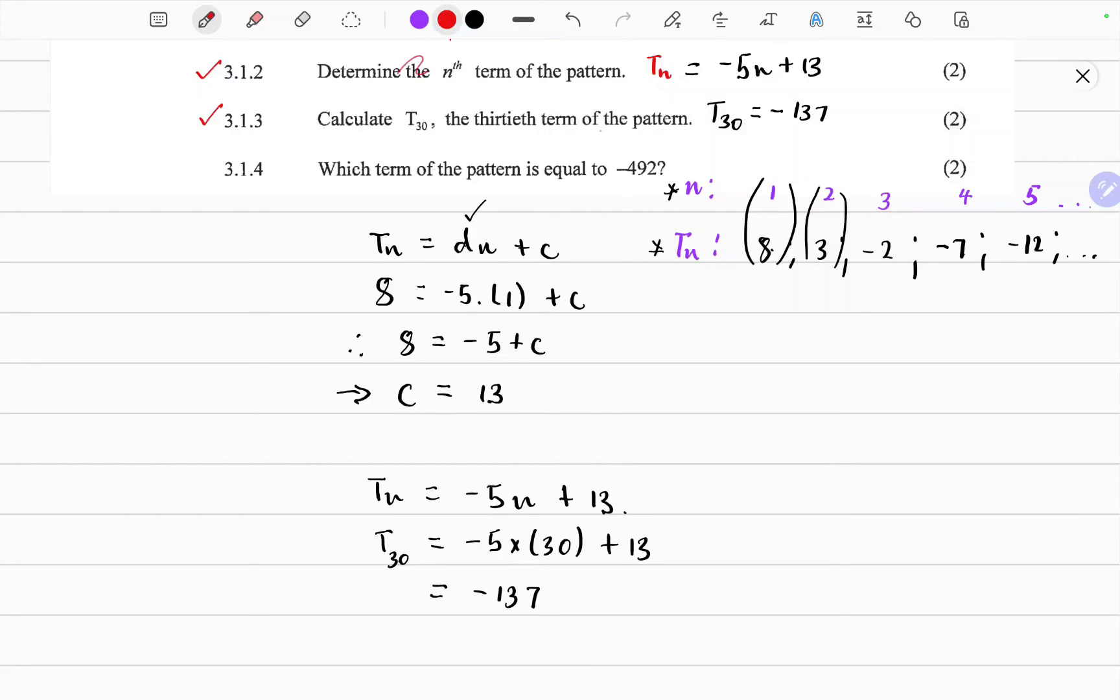So the last question. Which term of the pattern is equals to negative 492? So now they've given us the term itself, and they just ask for the position of that term. So we apply the formula for this pattern. Tn is equals to minus 5n plus 13.